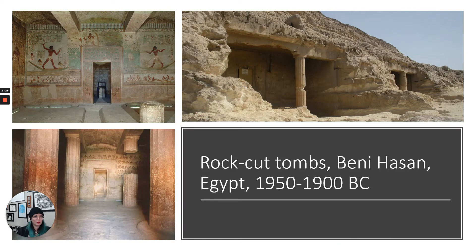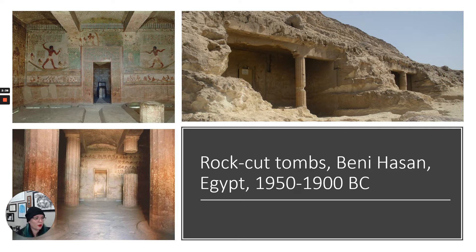The other big thing, other than slightly more realism and naturalism in sculpture in this time period, is what is happening in architecture, particularly with tombs — which are, as I've said over and over again, a big deal in Egypt because of the ka and the life-after-death aspect of their culture.